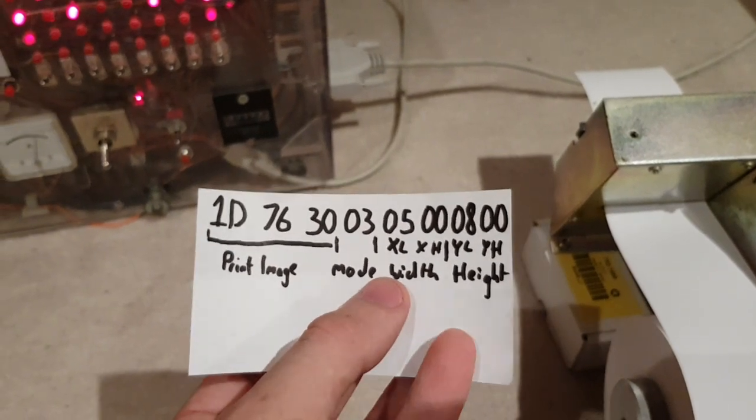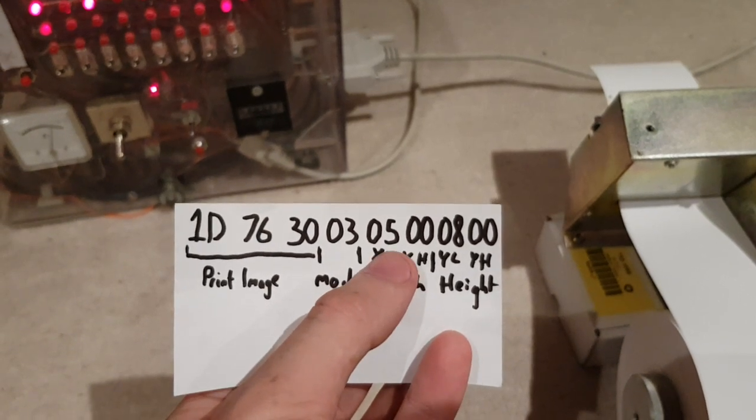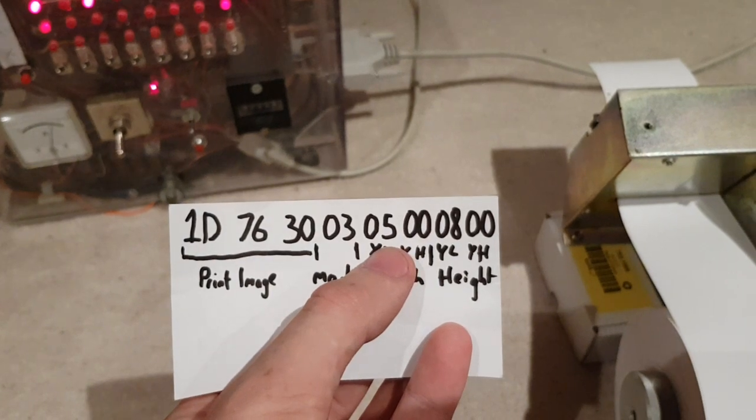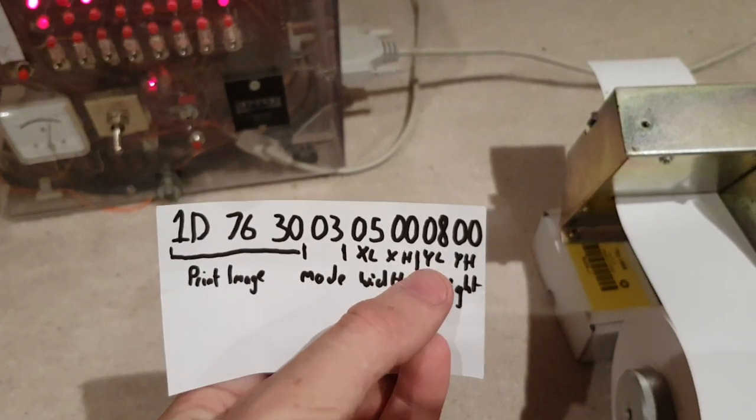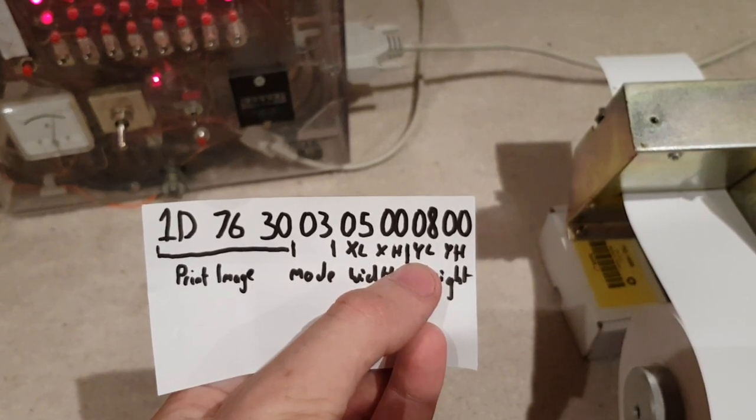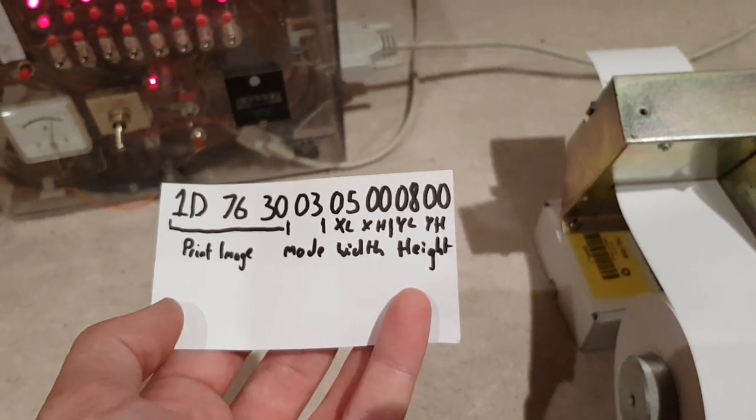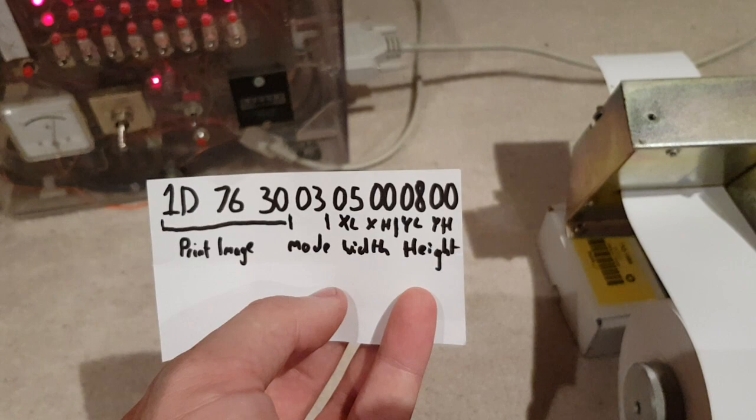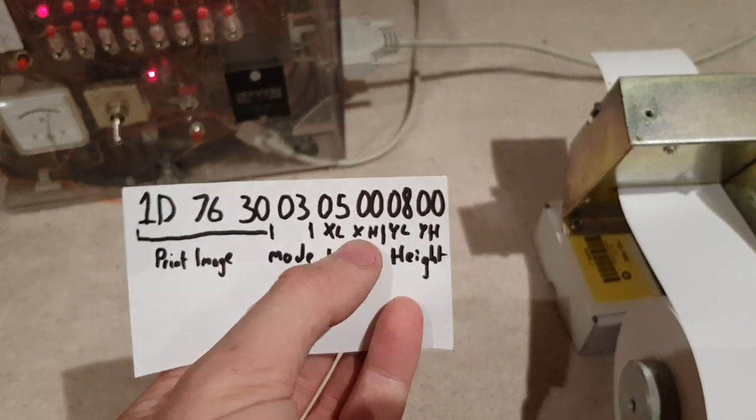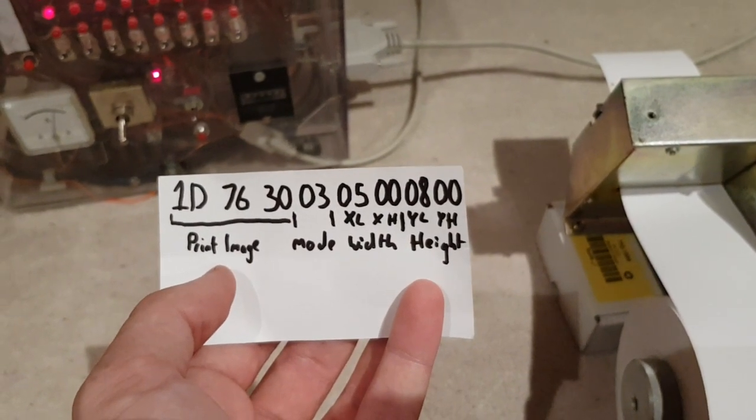And then you tell it how many bytes wide it is and how many bytes tall it is. So in this case we're doing 1 byte wide, which is 8 pixels across, and 8 bytes tall, which makes an 8x8 pixel square. And then you just stream it bytes. Each byte is a row of 8 pixels. When it reaches the end of a line of pixels, it just goes on to the next line.